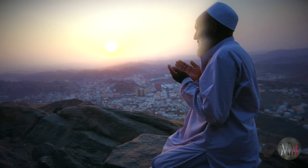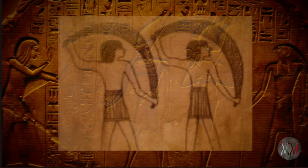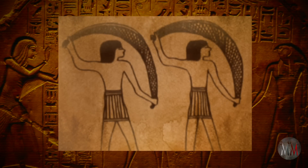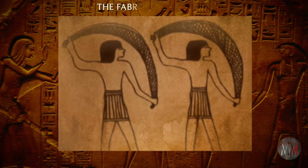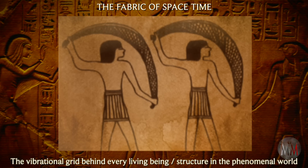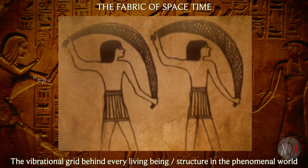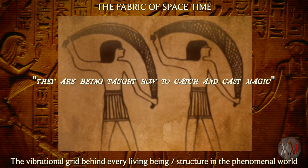That knowledge passed into the next spiritual culture that came into that area, which was Islam, and today 19 is a sacred number in Islam. The background grid of energy is also represented in a malleable form that can be directly manipulated and applied in the hands of initiates. When you see on the temple walls the picture of initiates with the net in their hands, the net is really the fabric of space-time — the vibrational grid behind every living being and every structure in the phenomenal world. The hieroglyphs accompanying this often say something like they are being taught how to catch and cast magic.